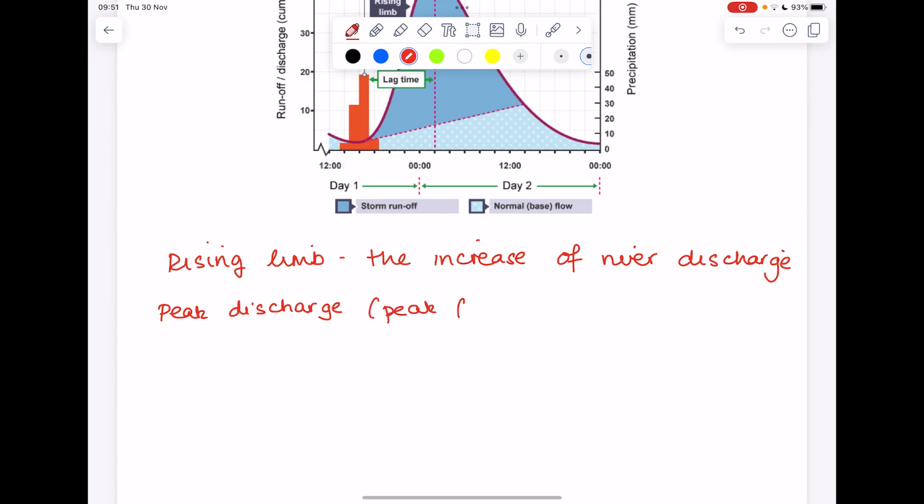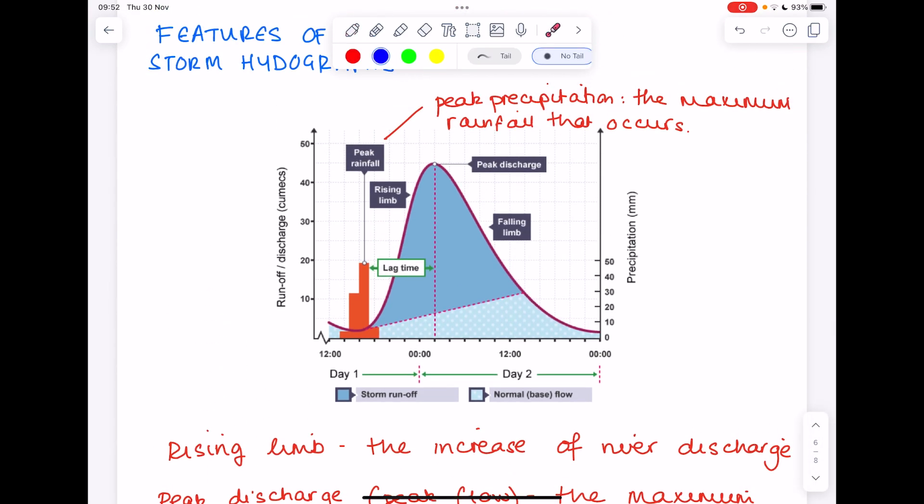The thing with geography is there's lots of names for the same thing. Because there is that delay between the peak precipitation or peak rainfall and the peak discharge due to that time taken for the water to flow into the rivers, we call that delay the lag time.